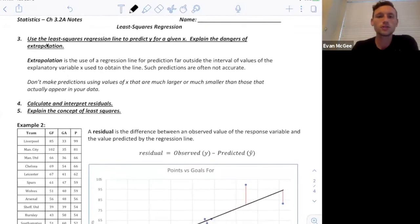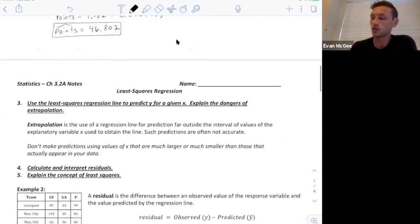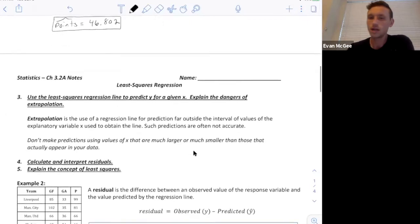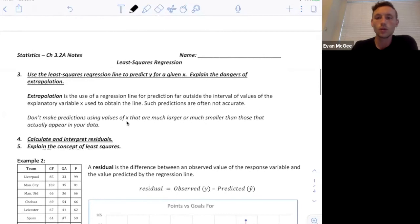Let's look at the third standard. Use the least squares regression line to predict y for a given x. That's what we just did in the previous problem. We predicted y for a given x and explain the dangers of extrapolation. Extrapolation is when we make predictions that are outside of the values of x that we have. For instance, if you look at our graph here, the smallest x value we have looks to be about 26, and our largest x value appears to be 102.